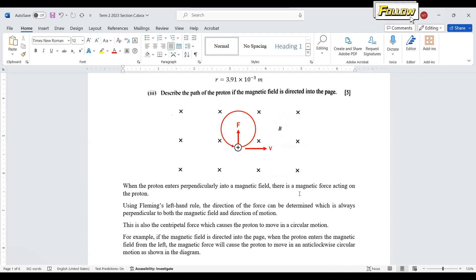This is how we determine that it is a centripetal force—because it is always perpendicular, which causes the proton to move in a circular motion. For example, if the magnetic field is directed into the page, as given in the question...